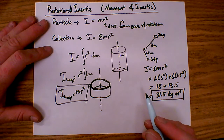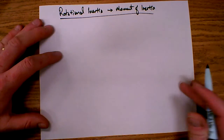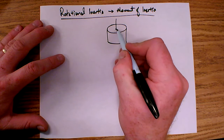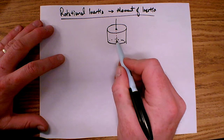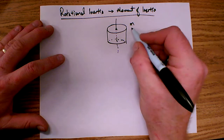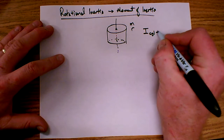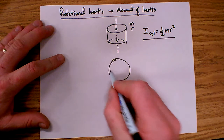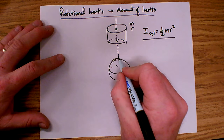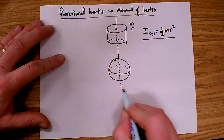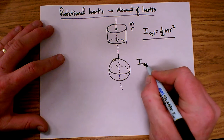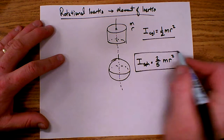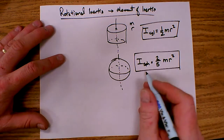There are some other solid shapes for which there's a nice formula for finding the moment of inertia. For a uniform solid cylinder with the axis of rotation passing through the center, the inertia is one half m r squared. For a uniform solid sphere with the axis passing through the center, the inertia is two fifths m r squared, where m is the mass of the sphere and r is the radius. So cylinder: one half m r squared; sphere: two fifths m r squared.